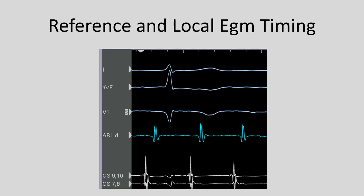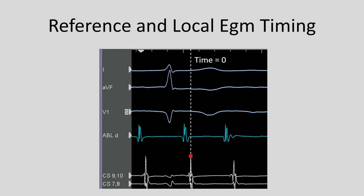Let's quickly first review how we're making an activation map. It involves picking a reference electrogram, usually from a stable catheter in the coronary sinus. As we move the ablation catheter or multipolar mapping catheter around the chamber, we find electrograms and local activation times, each of which will be compared to the reference electrogram, which is designated as time zero. Electrograms that are later than the reference are annotated as a positive value, and electrograms that are earlier than the reference electrogram have a negative value.